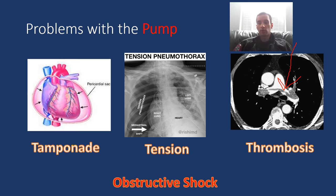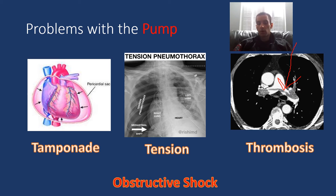These all involve an obstruction of the pump. Notice how they all start with T — tamponade, tension pneumothorax, thromboembolism. Some of you may have heard of the H's and T's in cardiac arrest to help identify reversible causes. Well, these are three of them, and they all lead to an obstructive shock picture.